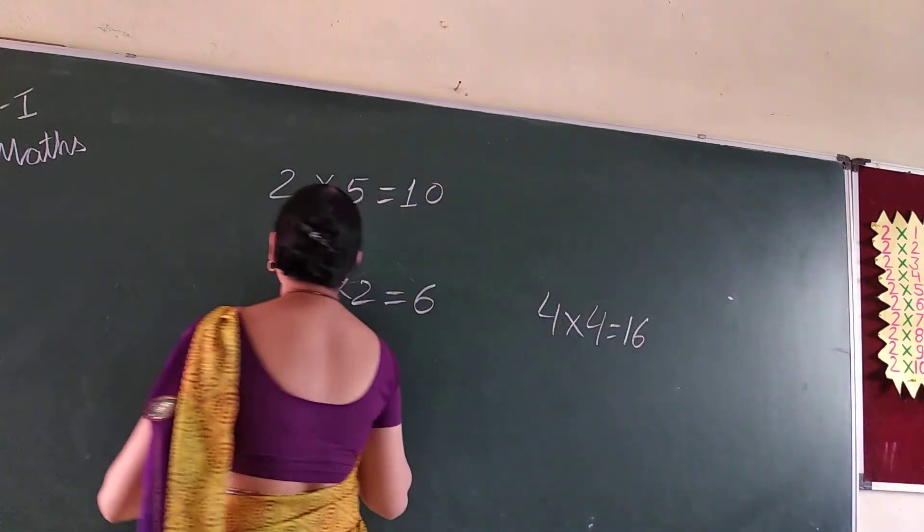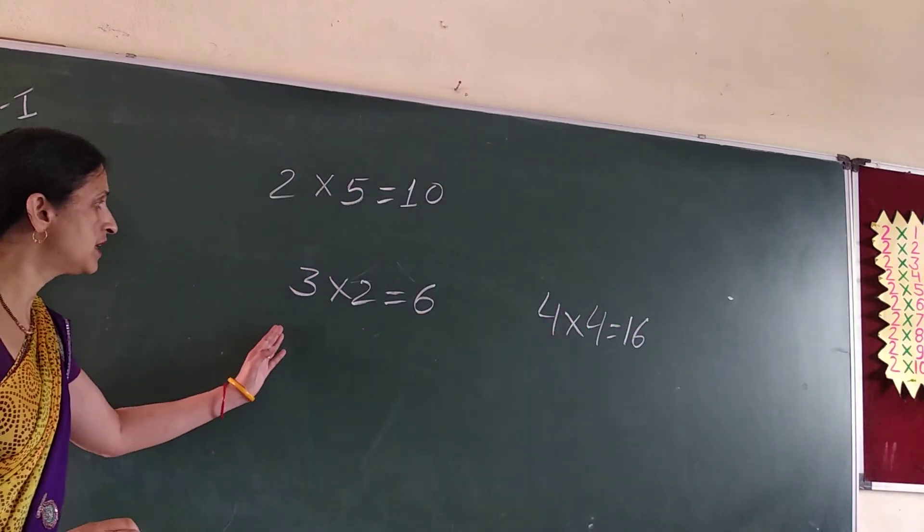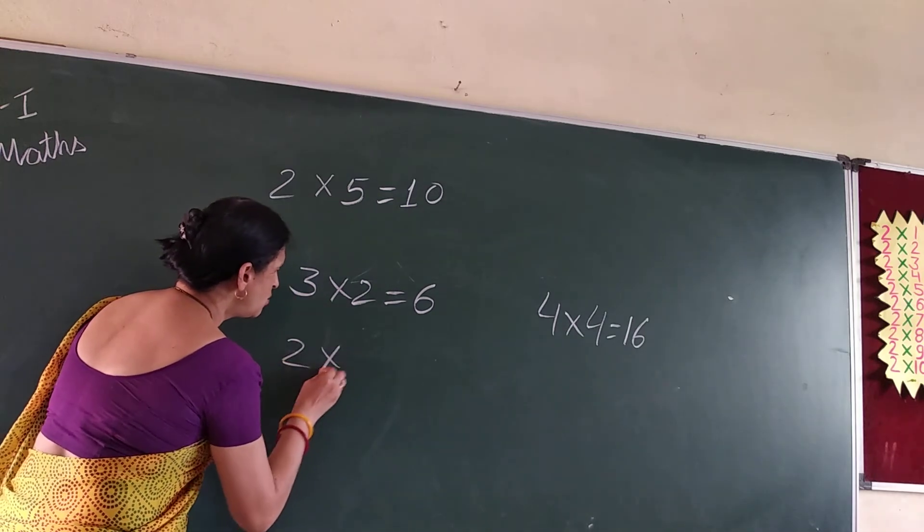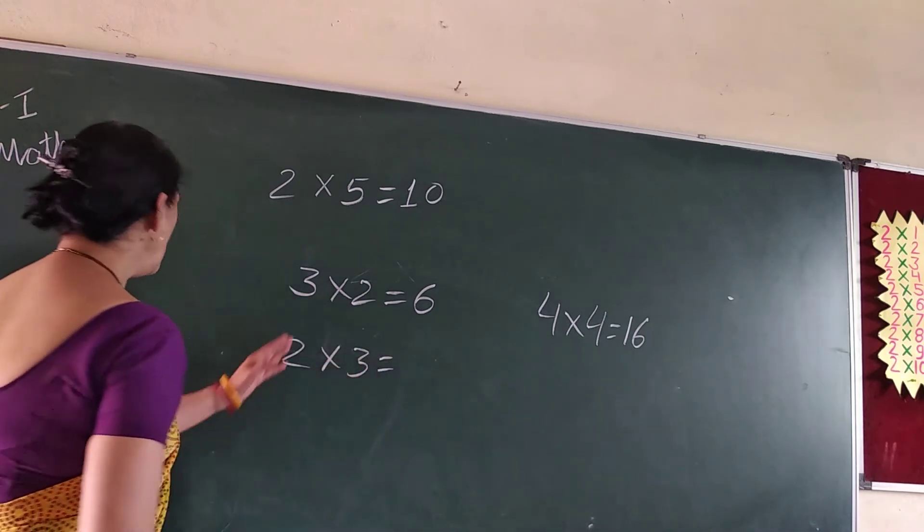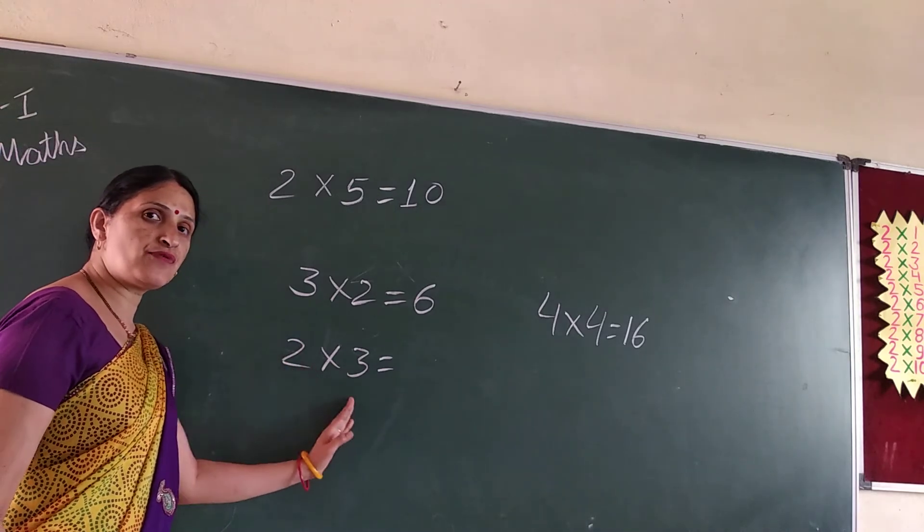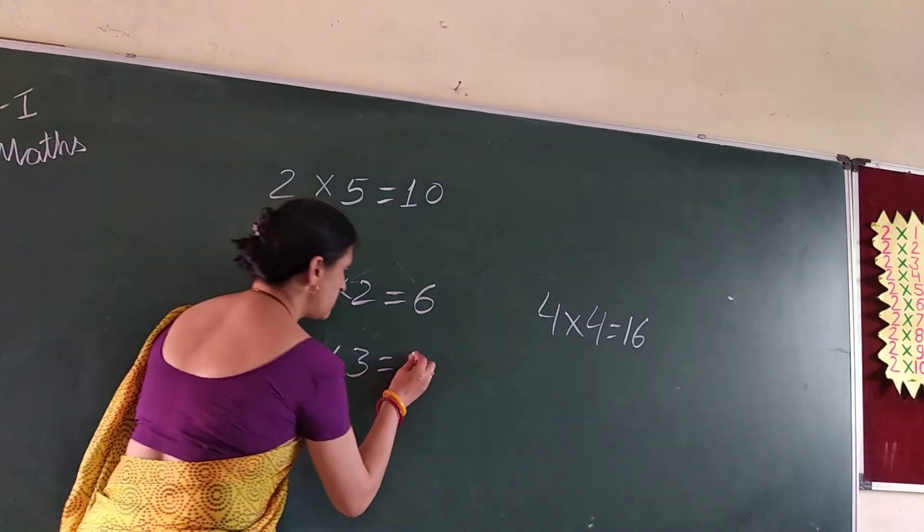The question is table of 2. Three 2's are 6. Two 3's are. Two 3's are. Two 1's are 2. Two 2's are 4. Two 3's are 6. This is 6.